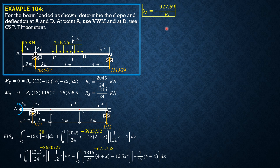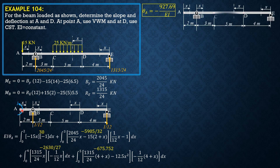Next, for δ_A, apply a unit upward load at A. Due to this unit upward load, the reaction at E is downward. The reaction times 12 equals 1 times 14, so 14/12 equals 7/6, meaning this reaction is 7/6 downward.